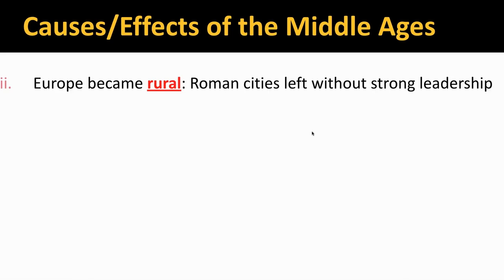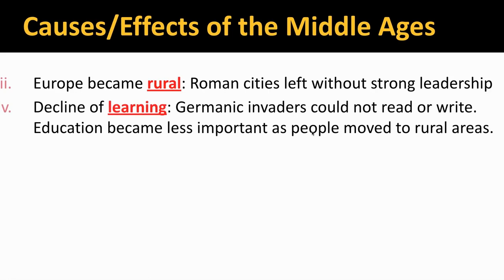You also get a decline in learning. The Germanic invaders could not read or write — that was never an emphasis in their culture. Education became less important as people moved to rural areas. Basically, survival was number one. If you're in a situation where you need to find your next meal or harvest your crops or else you could die, you're going to abandon all extra activities — all leisure activities, including education. You're not going to learn to read and write if finding your food source is your number one priority. Combined with the culture of these Germanic peoples, learning just starts to disappear.